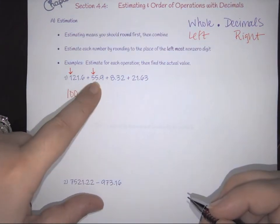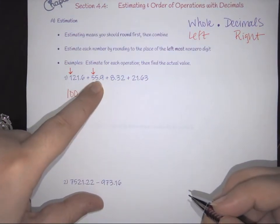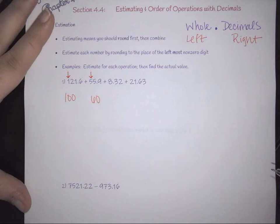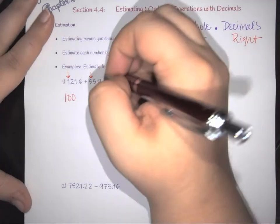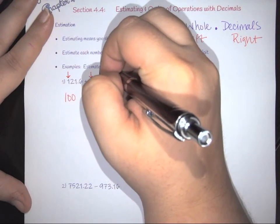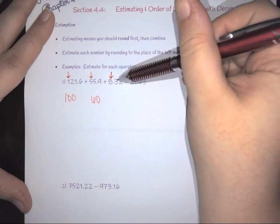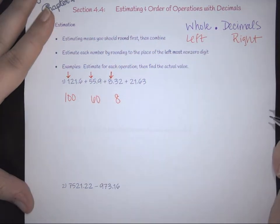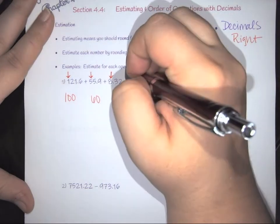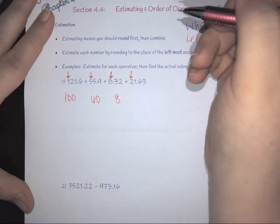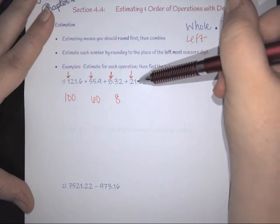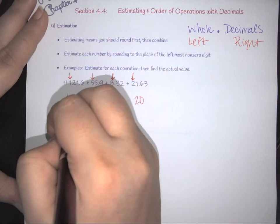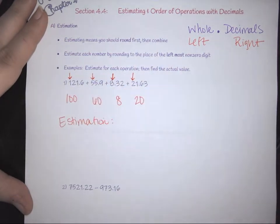For 55.9, the leftmost digit is 5. The number next to it is also 5, which means the digit rounds up, making this 60. For 8.3, the leftmost digit is 8; the 3 means it stays the same, so it remains 8. For 21.6, the leftmost digit is 2, the number next to it is 1 — less than 5 — so the whole thing rounds down to 20.